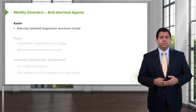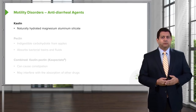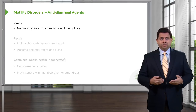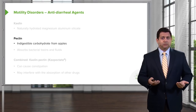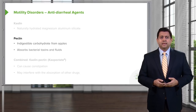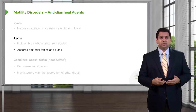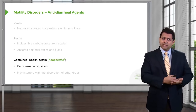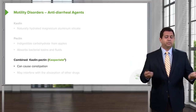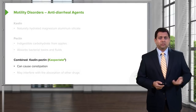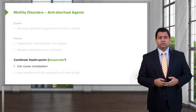Other anti-diarrheal agents include kaolin, a naturally found magnesium aluminum silicate that is hydrated and works quite well. Pectin is an indigestible carbohydrate that comes from apples; it absorbs bacterial toxins and some fluids. When you combine kaolin and pectin, you get an agent called kaopectate, which is sold commercially. It can cause constipation, but when given to a patient with diarrhea, it works quite nicely.